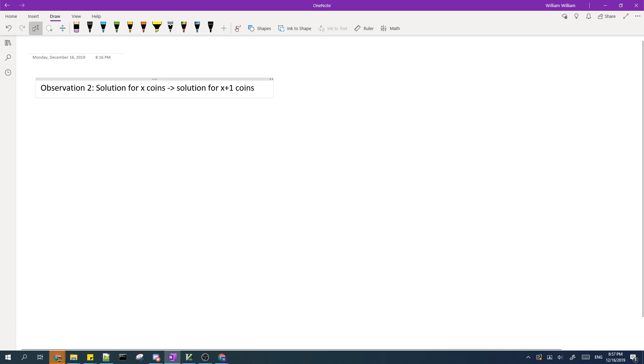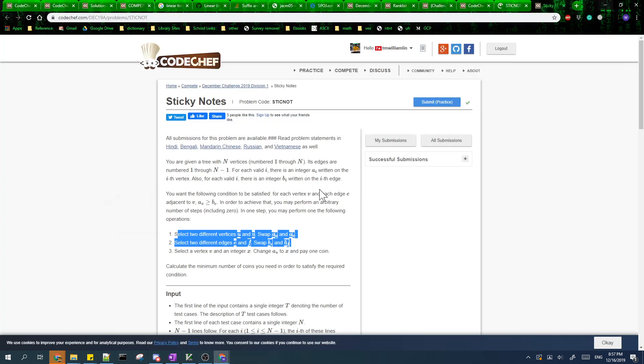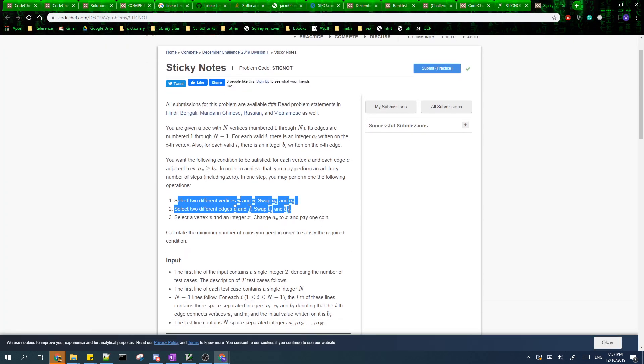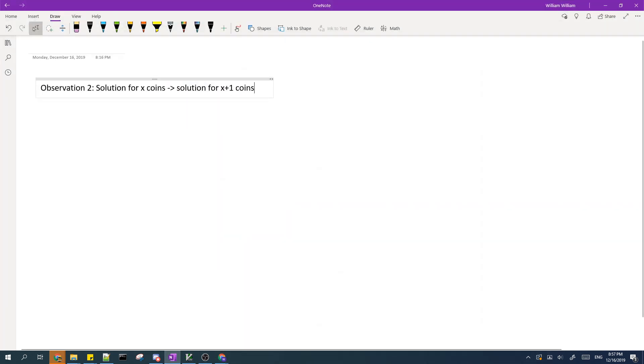The next observation is that if there exists a solution that uses X coins, then there also exists a solution which uses X plus one coins. This is pretty obvious because you can simply choose a vertex and change its weight to infinity and you pay one extra coin and you'll still satisfy this condition for all nodes. And because of this property, we can binary search for the minimum value of X which is what we're trying to find in the problem.